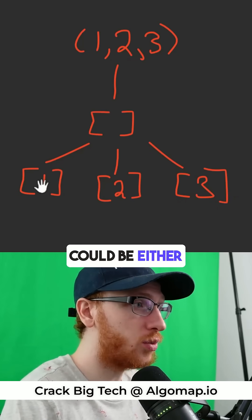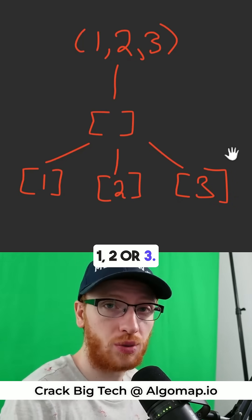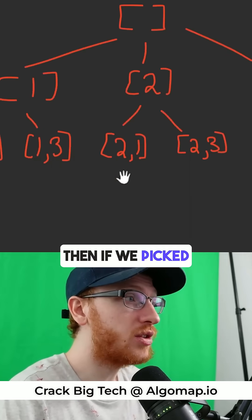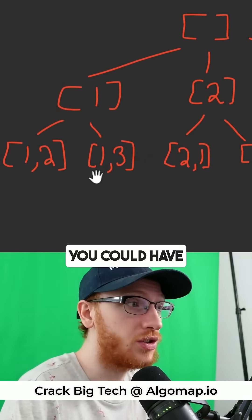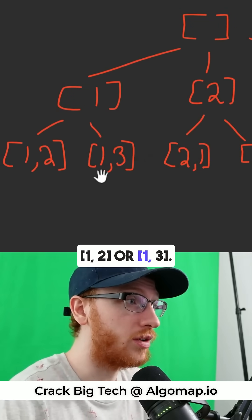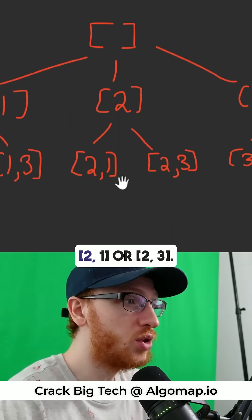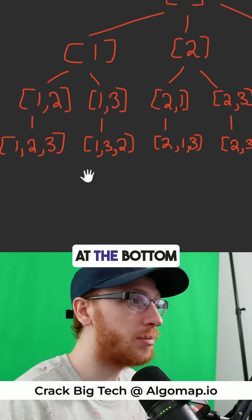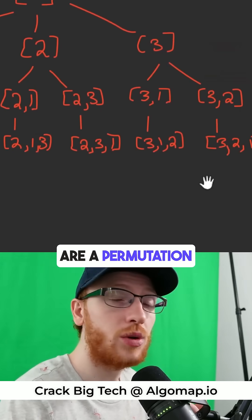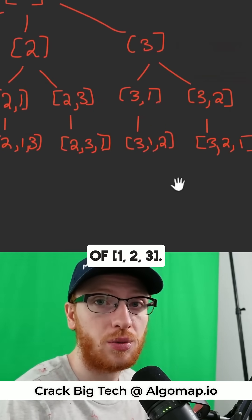The first number could be either 1, 2, or 3. Then if we picked 1 as the first number, you could have 1, 2 or 1, 3. You could have 2, 1 or 2, 3. Each of the leaves at the bottom are a permutation of 1, 2, 3.